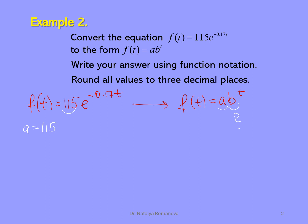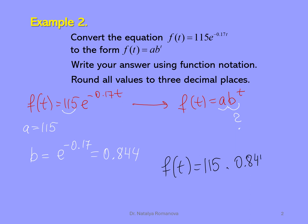Using the given information, we can write b equals e to the power of negative 0.17. Using technology, you can find this value — it would be 0.844. Now we have all values to find the exponential form. f of t equals initial value a, which is 115, times b. We found b — it is 0.844.